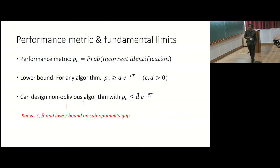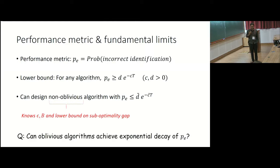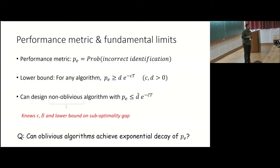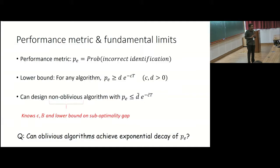Let us start with the naivest approach: uniform exploration with pure empirical estimators. I have a budget of T pulls and I do the arms in round-robin fashion, so each arm gets roughly T/k pulls. For each arm at the end I compute the empirical CVaR estimator. Given n i.i.d. observations x₁ through xₙ, I sort them into order statistics. By definition of CVaR, a fraction α of my samples should be ≤ VaR and a fraction (1−α) should be larger. The CVaR estimate is the estimated VaR plus the average of the excess above it.